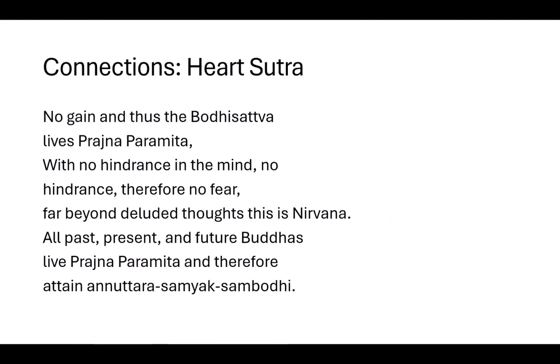With no gain, 'the Bodhisattva lives prajnaparamita, with no hindrance in the mind, no hindrance, therefore no fear, far beyond deluded thoughts' — this is Nirvana, accomplished right there. 'All past, present, and future Buddhas live prajnaparamita, and therefore attain Anuttara Samyak Sambodhi, or Supreme Perfect Awakening.' Basically the first two-thirds of the Heart Sutra are all about the skandhas. I really wanted that to be pointed out, because we often lose those terms since we're not using Sanskrit or Pali, but in the original it is using those technical terms as it goes through them.